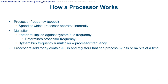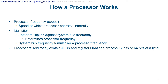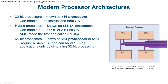Processor frequency, also known as speed, measures how fast a processor can process information. The multiplier is a factor multiplied against the system bus frequency to determine the processor frequency. So: system bus frequency × multiplier = processor frequency. Modern processors sold today contain ALUs and registers that can process 32 bits or 64 bits at a time.